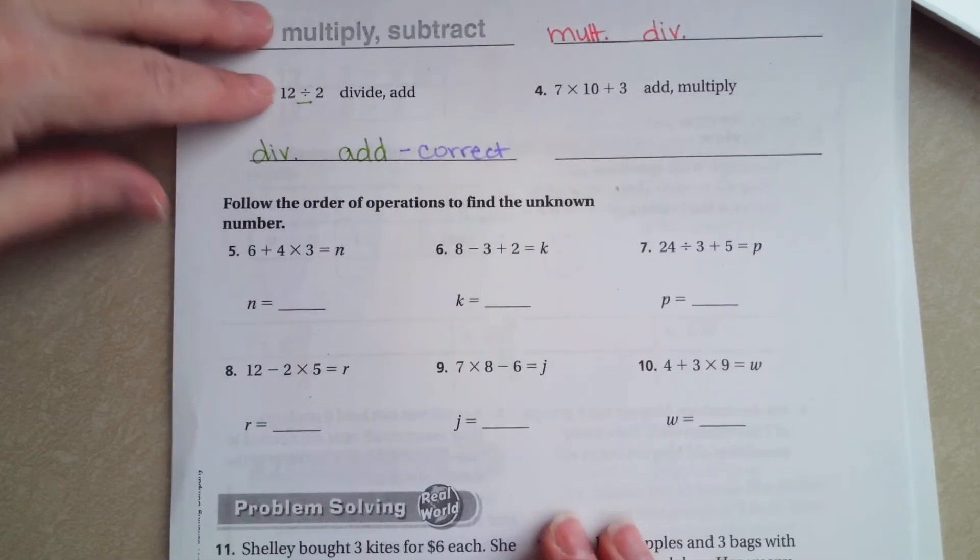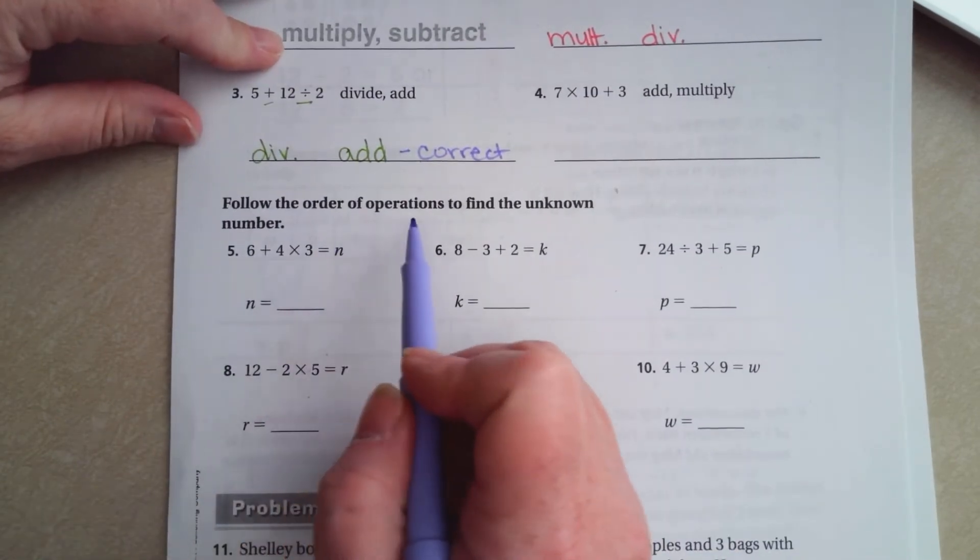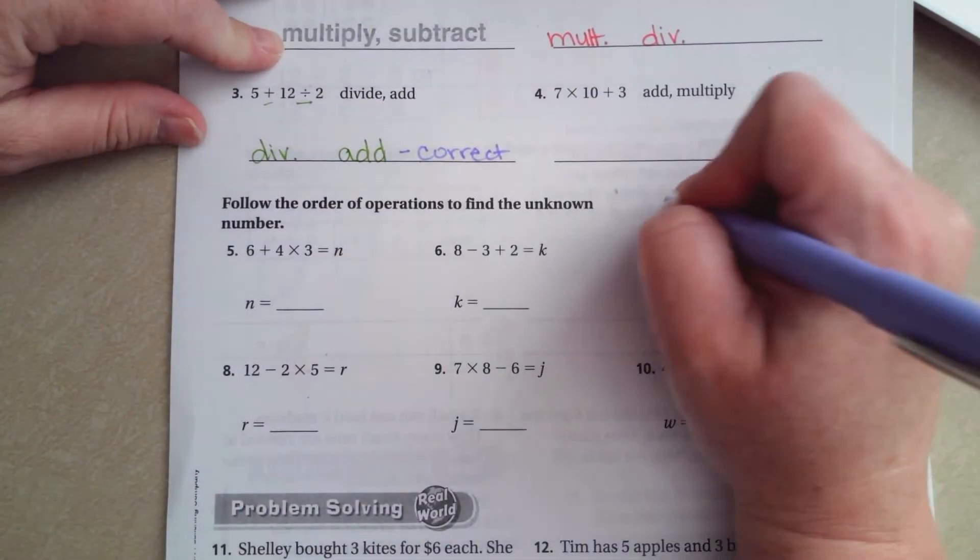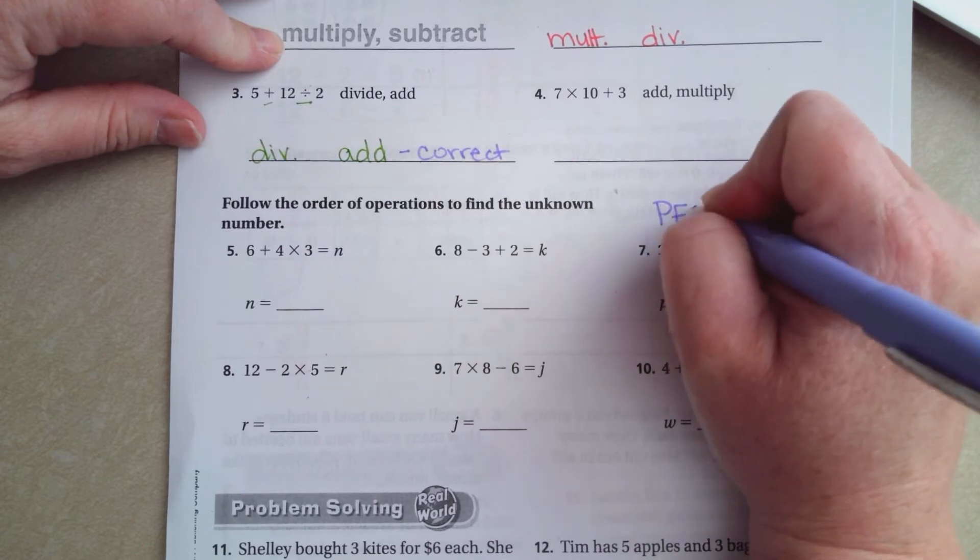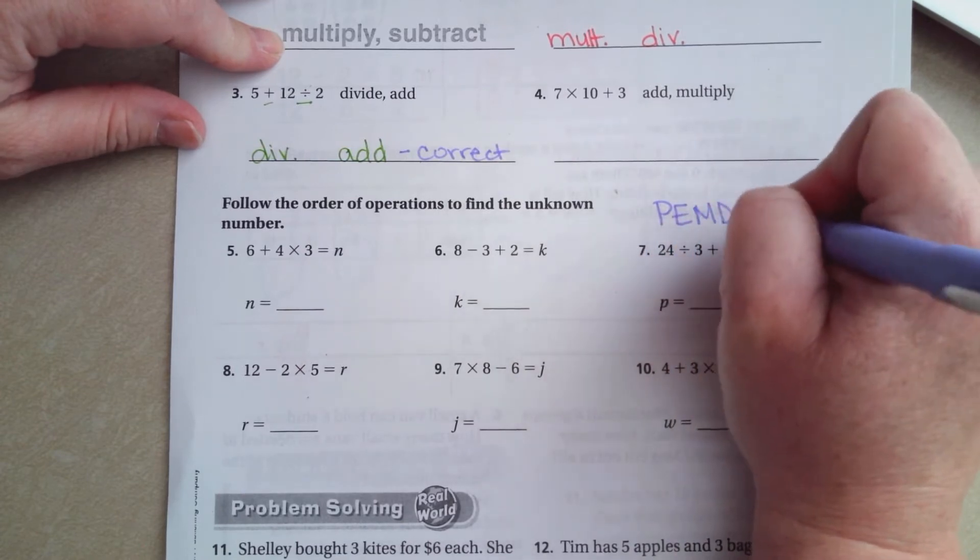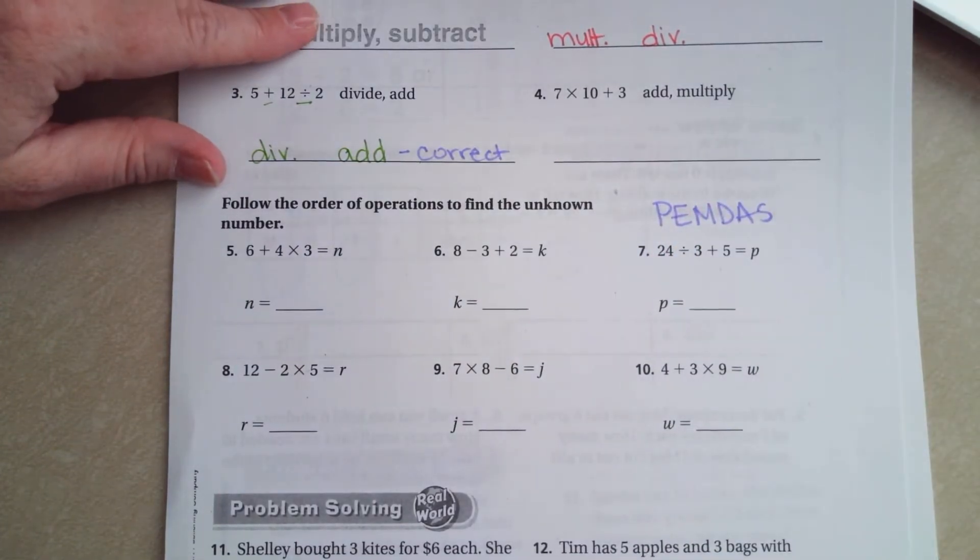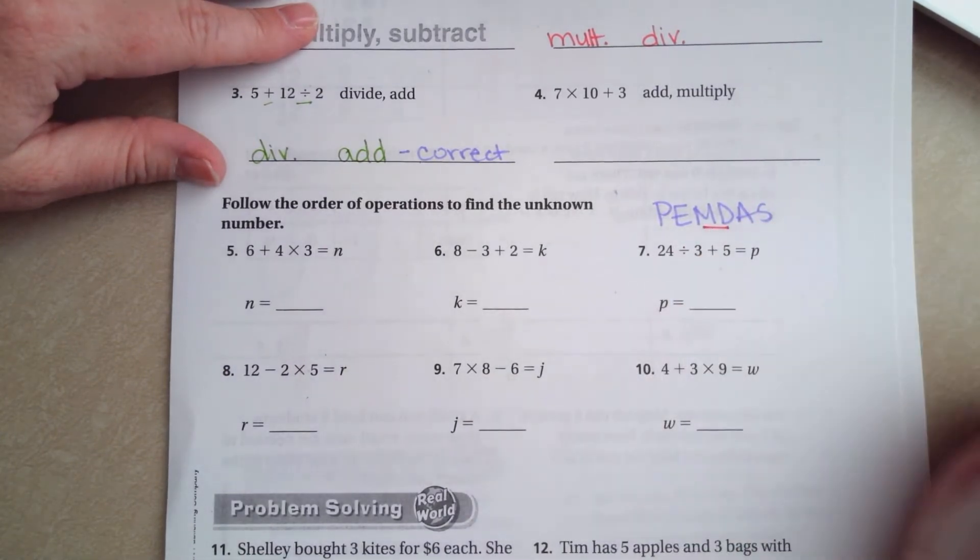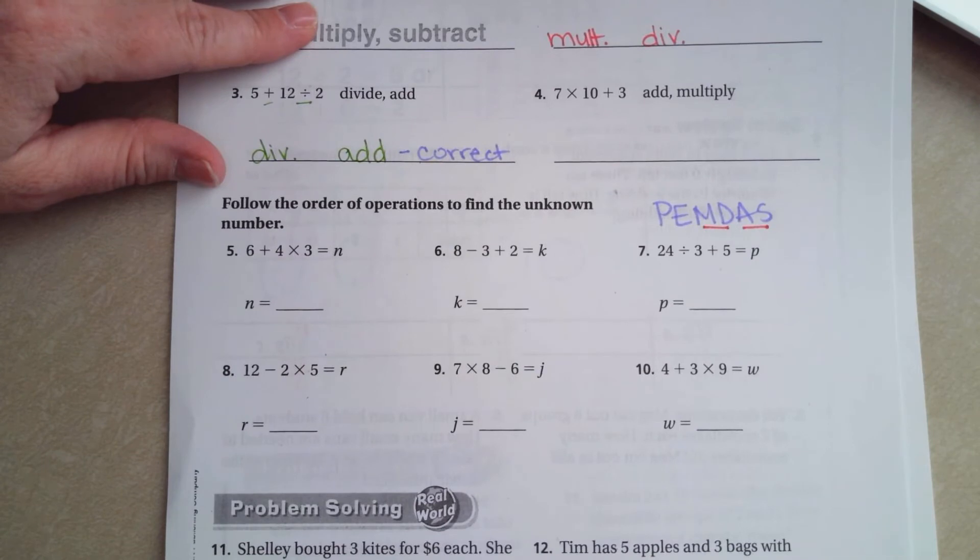All right so these we're going to follow the order of operations to find the unknown number. So I'm going to go ahead right here where we can see it and write PEMDAS again. Please remember that multiplication and division are together and addition and subtraction are together. It's whichever one comes first in the problem.